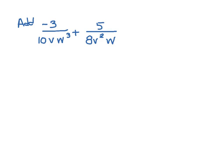Now we're being asked to add these two rational expressions: negative 3 over 10vw cubed plus 5 over 8v squared w. Still, the concept is the same.